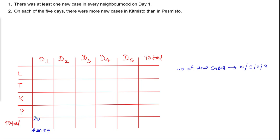Statement number 2 says that on each of the 5 days, there were more new cases in K than in P. So on each day, K is greater than P. The number of new cases in K is more than the number of new cases in P on every single day.